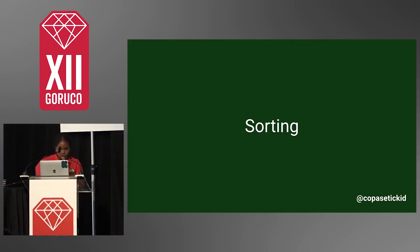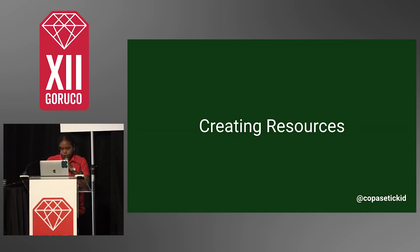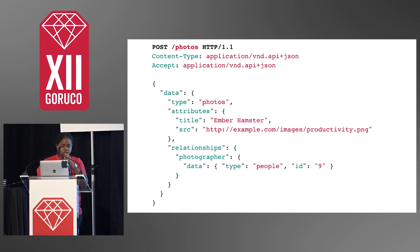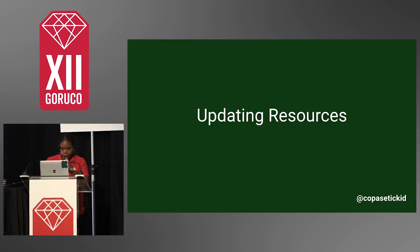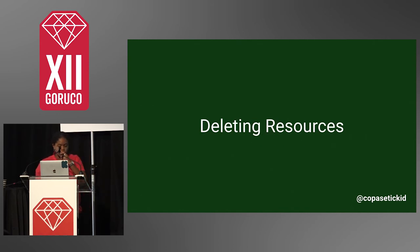You can also sort results, though most people tend to save sorting on the client side. For CRUD actions, you can create resources using POST requests — for example, creating a new photo and assigning its relationship to the person who took it in the same request. Updating is done with PATCH requests, passing along only what you need. Wholesale updates are generally discouraged as a destructive action. Updating relationships can also be done independently using that same link without bringing back the parent object. Deleting uses the standard DELETE request.